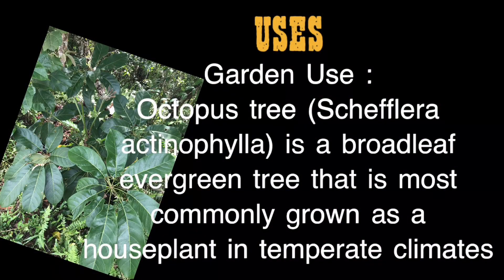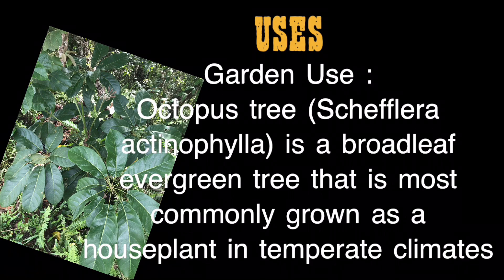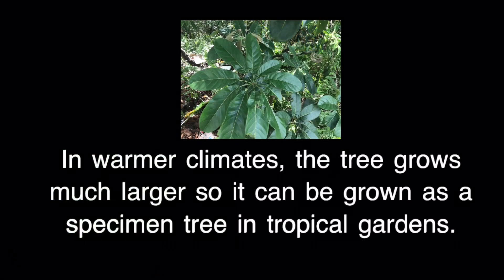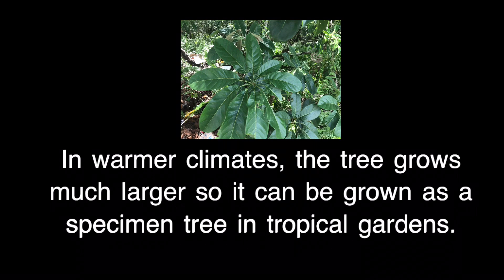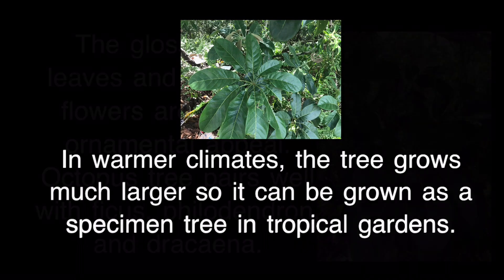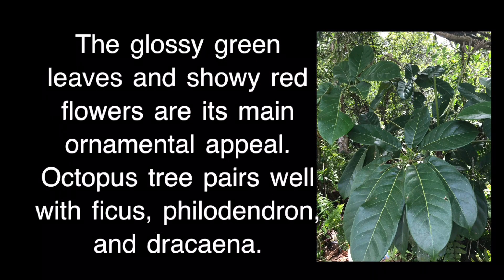Garden use: Octopus Tree (Schefflera actinophylla) is a broadleaf evergreen tree most commonly grown as a houseplant in temperate climates. In warmer climates the tree grows much larger, so it can be grown as a specimen tree in tropical gardens. The glossy green leaves and showy red flowers are its main ornamental appeal. Octopus Tree pairs well with ficus, philodendron, and dracaena.